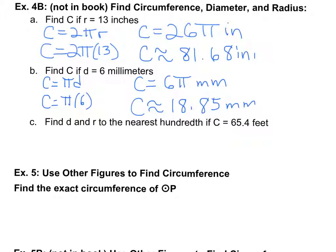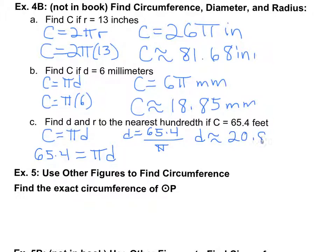Our very last example, part C here, we're going to take again and use the simpler of the two formulas, since we're asked to find both the diameter and the radius and we're given the circumference. Just like before, plug in what I know: 65.4 is going to equal πD. To get D alone, we're going to divide 65.4 by the π key on my calculator. D is going to give me 20.82, and this is feet our units.